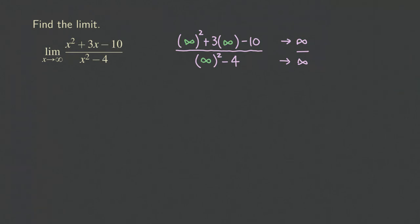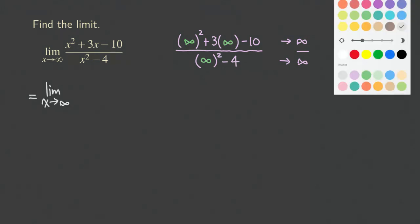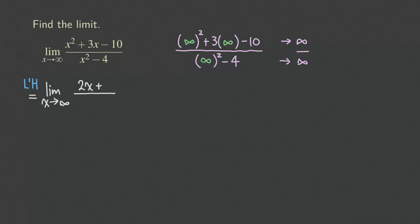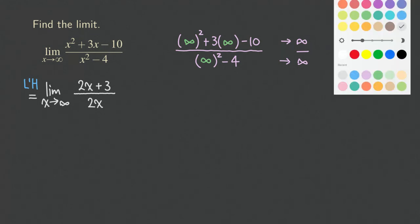We can now apply L'Hôpital's rule, indicating it on the equal sign. We've actually computed these derivatives in the previous problem. The derivative of the numerator x squared plus 3x minus 10 is 2x plus 3, and the derivative of the denominator x squared minus 4 is 2x. So we get (2x + 3) over 2x.